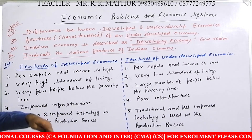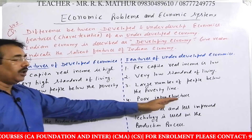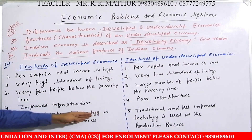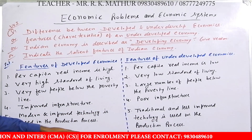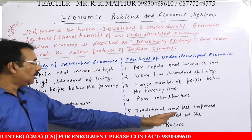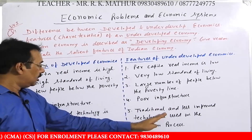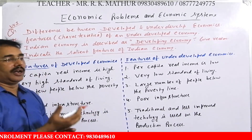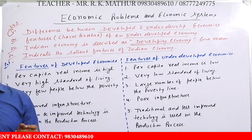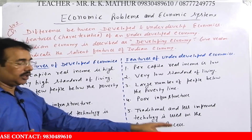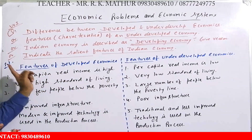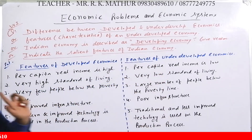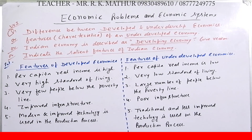Developed countries में improved infrastructure है, जबकि यहाँ poor infrastructure है। Developed countries modern और improved technology को production के लिए use करते हैं, जबकि हम लोग traditional या less improved, outdated चीजें adopt कर लेते हैं। So these are the differences and features of developed and underdeveloped economy।